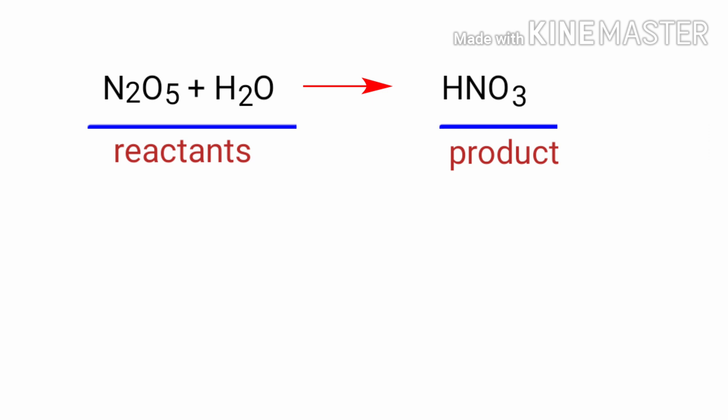In this equation the reactants are dinitrogen pentoxide and water, and the product is nitric acid. If you look at this equation, the equation is not balanced.